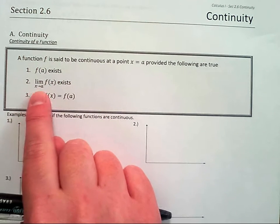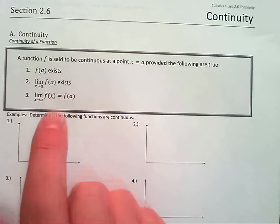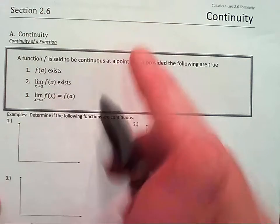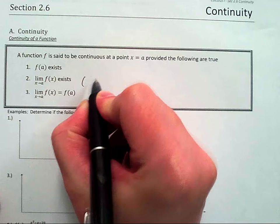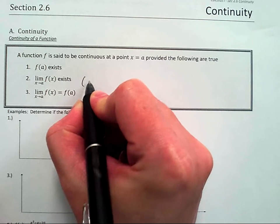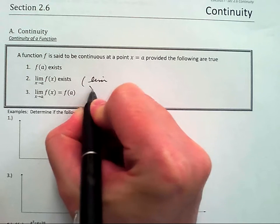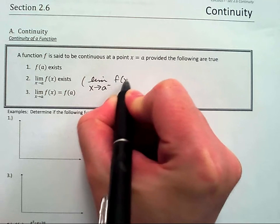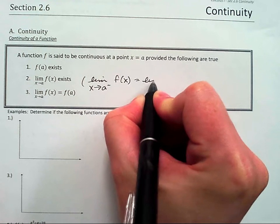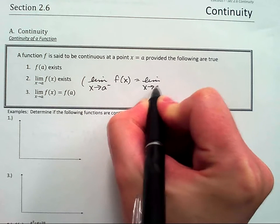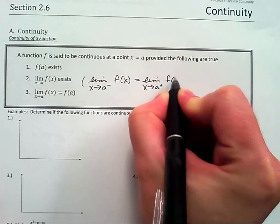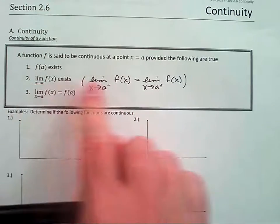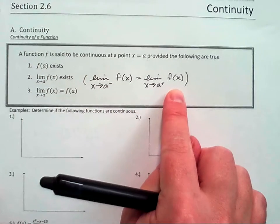The limit as x approaches a of f(x) exists. How do we know when the limit as x approaches a exists? Okay, broken record time. The limit from the left equals the limit from the right, then the limit exists.